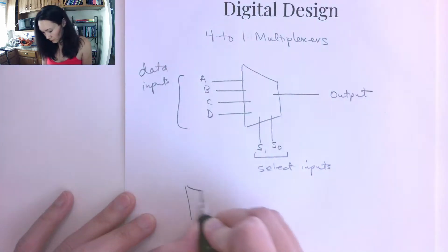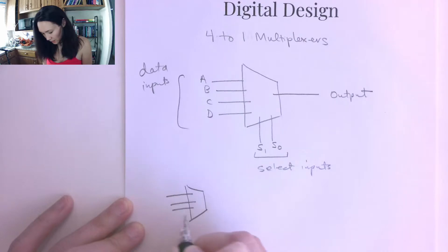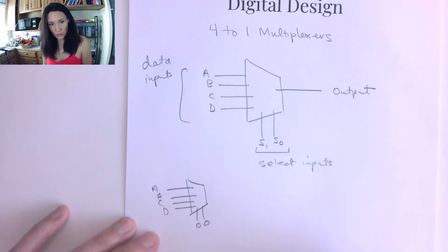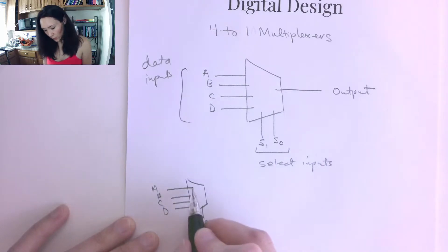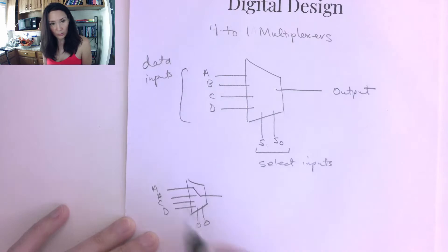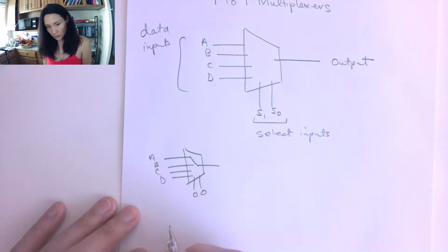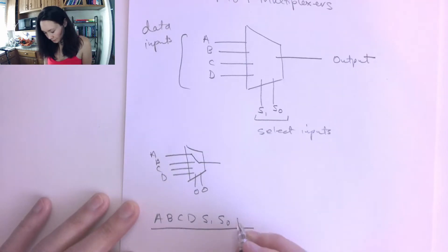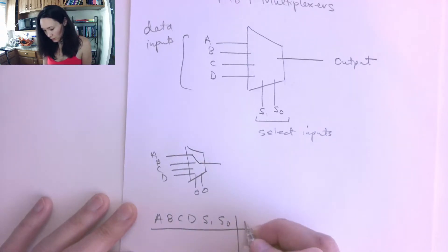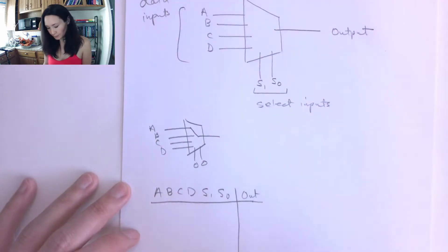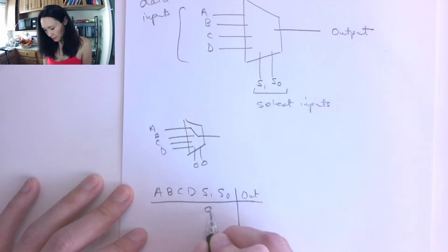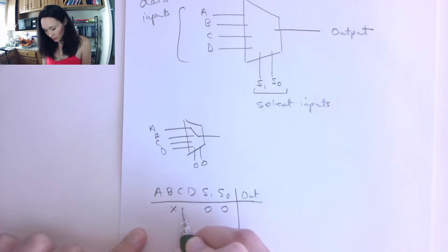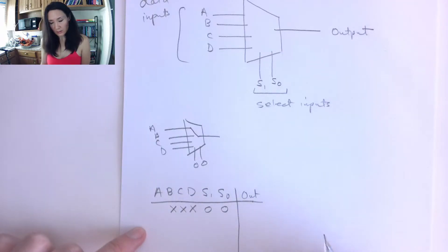Let's look at the different cases. With inputs A, B, C, D, suppose on our select lines we have the first case: S1=0, S0=0. That means we're going to select the first input A and pipe it to the output. In our truth table, when S1 is zero and S0 is zero, we select what's on A, so B, C, and D — we don't care. If we have a zero coming in on A, then zero is piped to the output; if we have a one on A, then we get a one on our output.